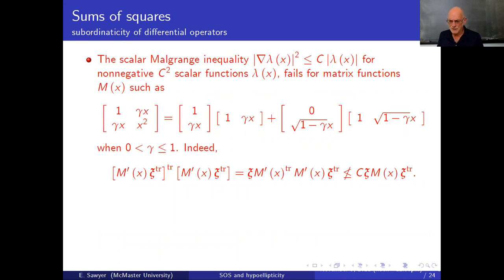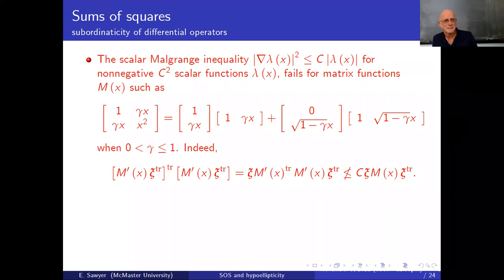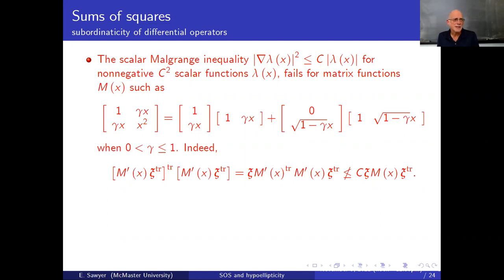If we turn to differential equations, what is it that we want to know about sums of squares that has anything to do with differential equations? Let's start with a very familiar inequality for scalar functions — I think it's due to Malgrange. It's the inequality that says grad lambda squared is less than or equal to a constant times mod lambda, or equivalently grad lambda is controlled by the square root of lambda for non-negative C² scalar functions. You just apply Taylor's formula of degree two, make an optimal choice, and it pops out.